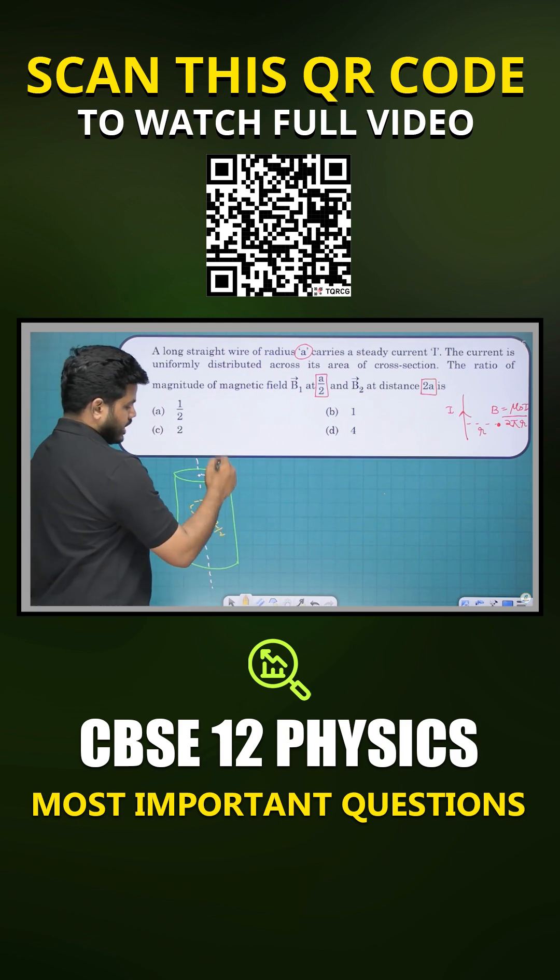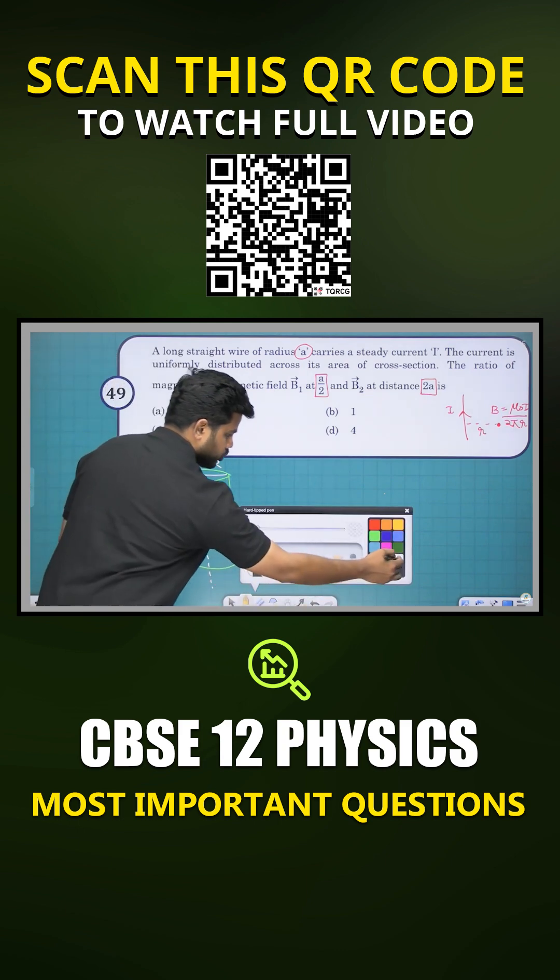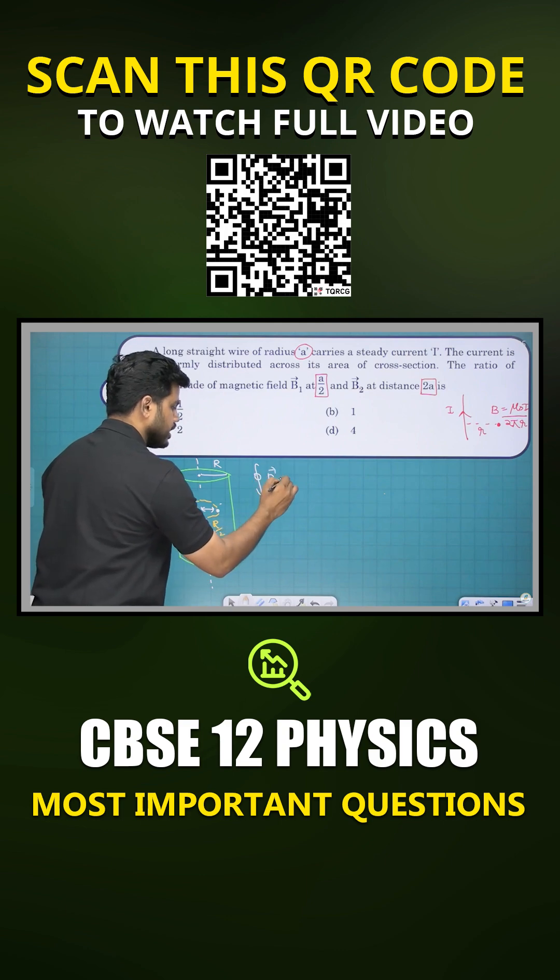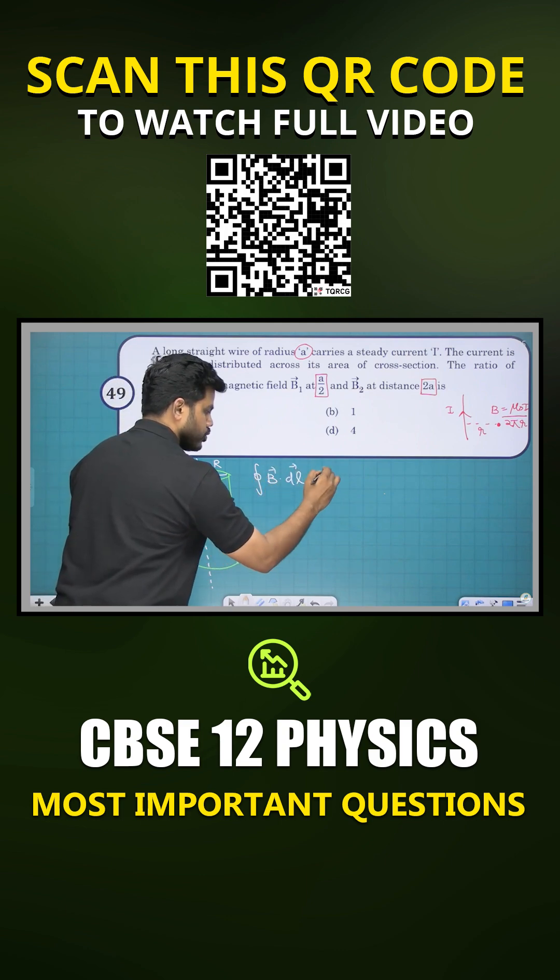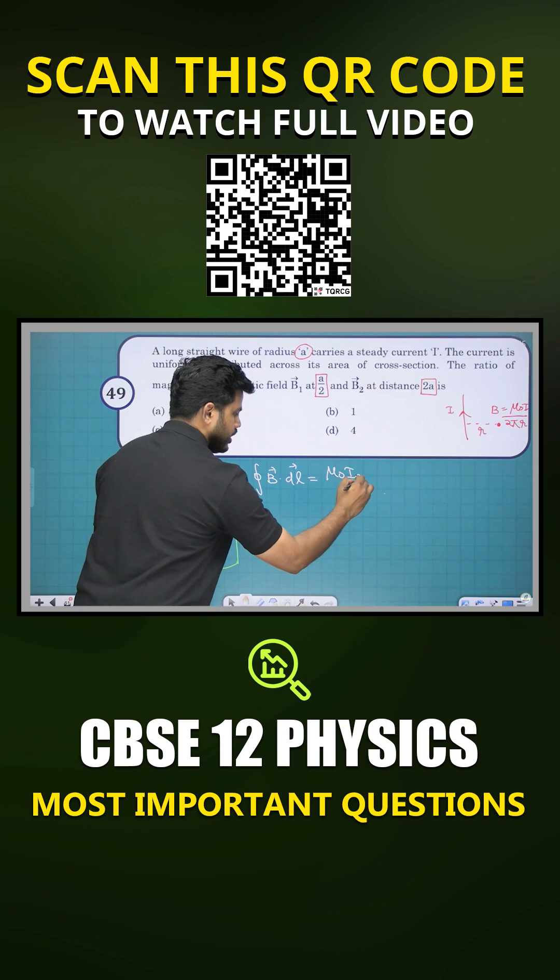So then what about the current? Ampere's circuit law. We can go for the mathematical expression for Ampere's circuit law: integral B dot DL is going to be equal to mu naught I enclosed.